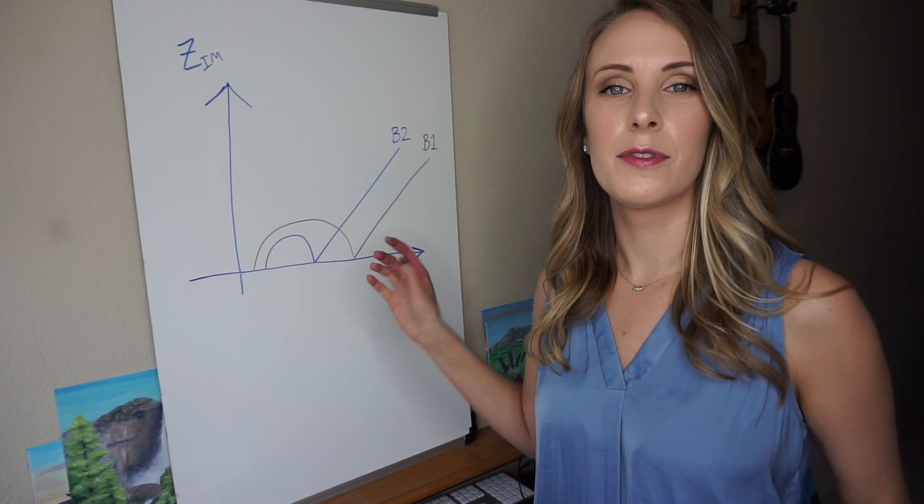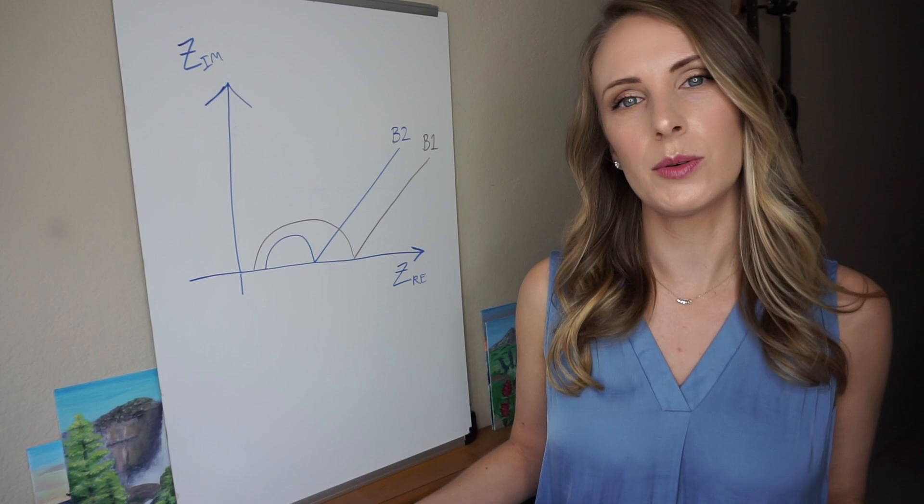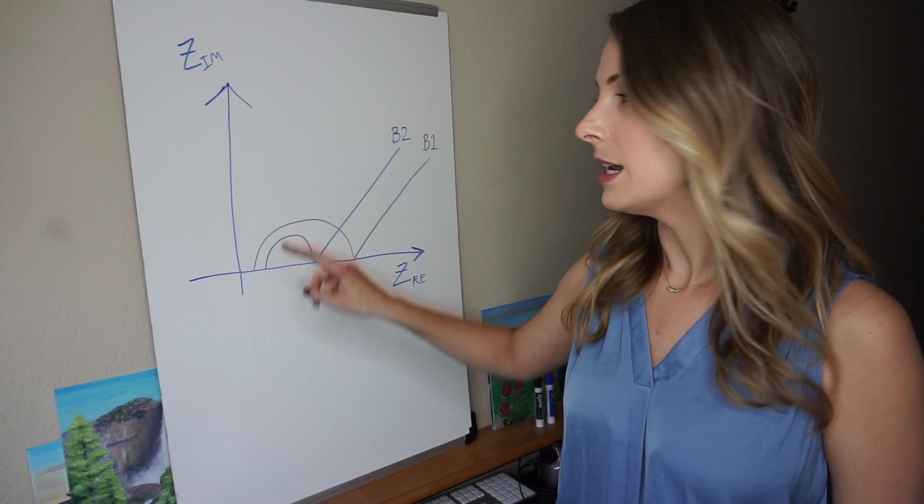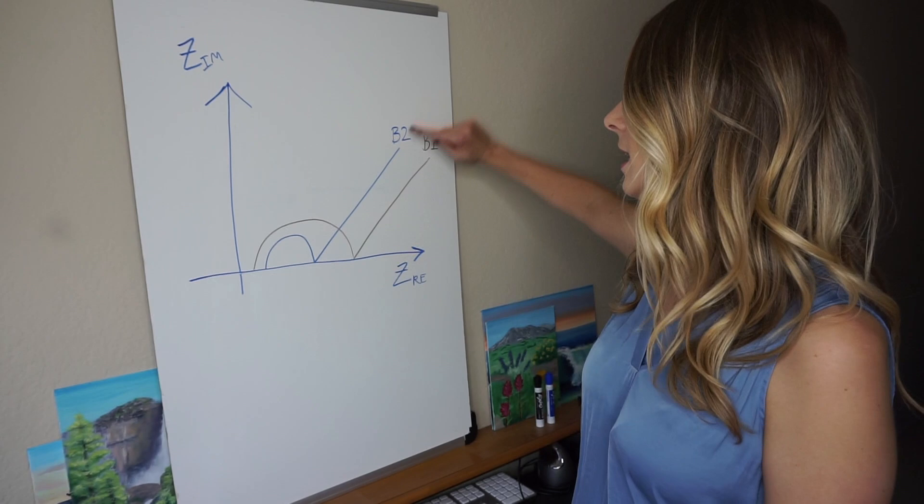Now there's a few areas of this Nyquist plot that are probably the most important as a battery scientist when we're trying to interpret this data. The first part is this first gap between the zero point and the beginning of the semicircle.